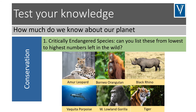Hopefully that all sounds good to you so far. Before we find out what else you're going to do on the course, have a little go at our quiz to test your knowledge about how much we know about our planet already. The first question is to do with conservation — you've got some animals here and the task is to list them from the lowest numbers left in the world to the highest numbers left in the world. These are all critically endangered species, according to the IUCN.